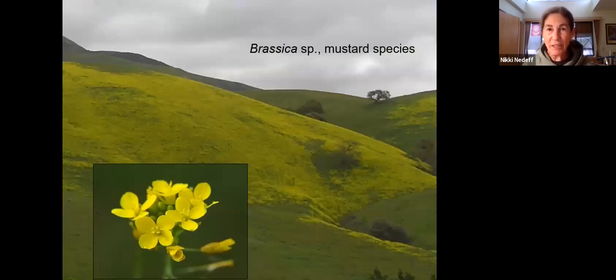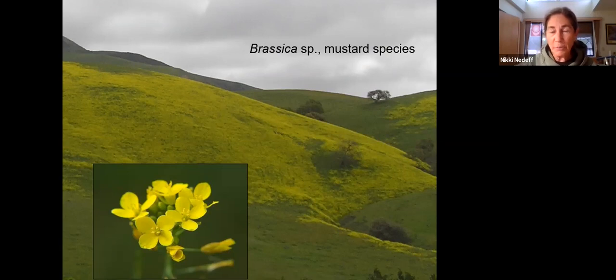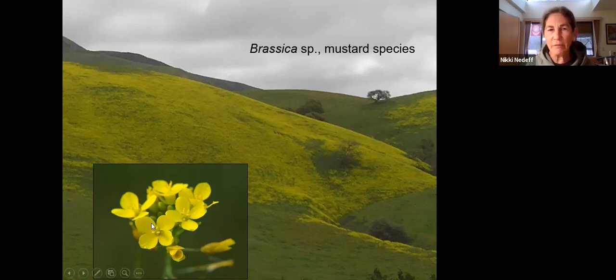You can make the mistake of thinking you're looking at Monolopia or the Lastenia of the goldfields, but this is the non-native weedy field mustard, Brassica. All members of this family have petals that are radially symmetrical — there are only and always four.